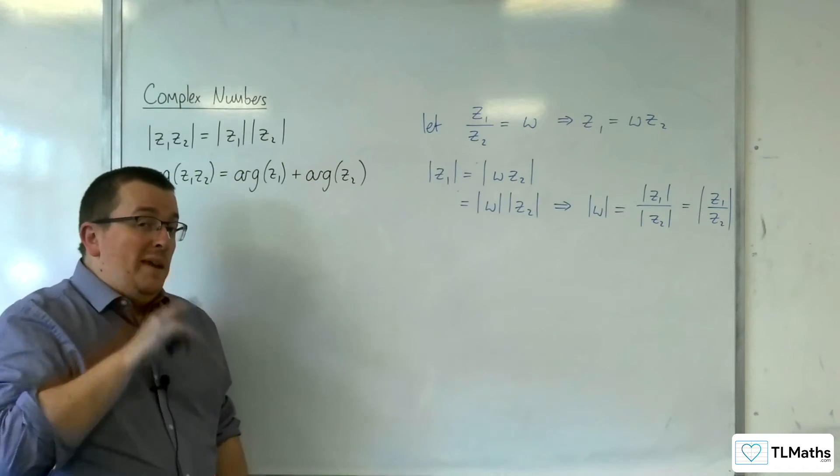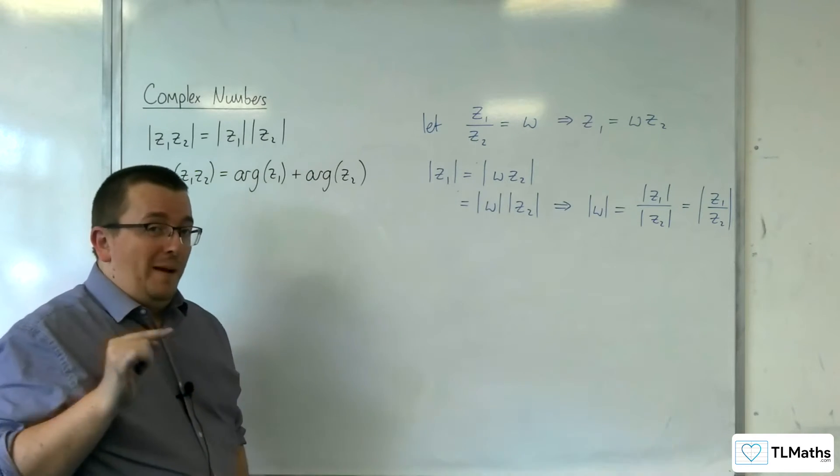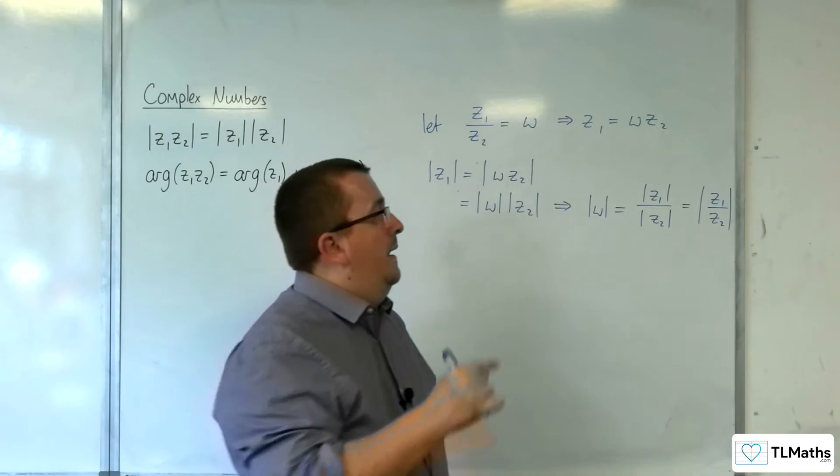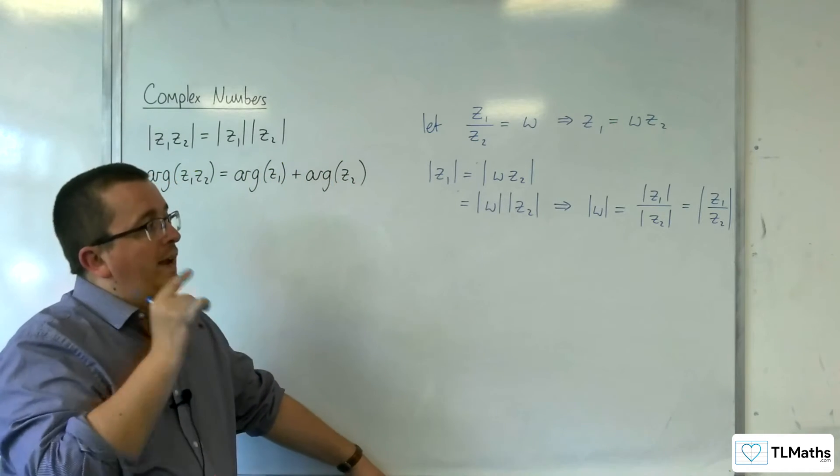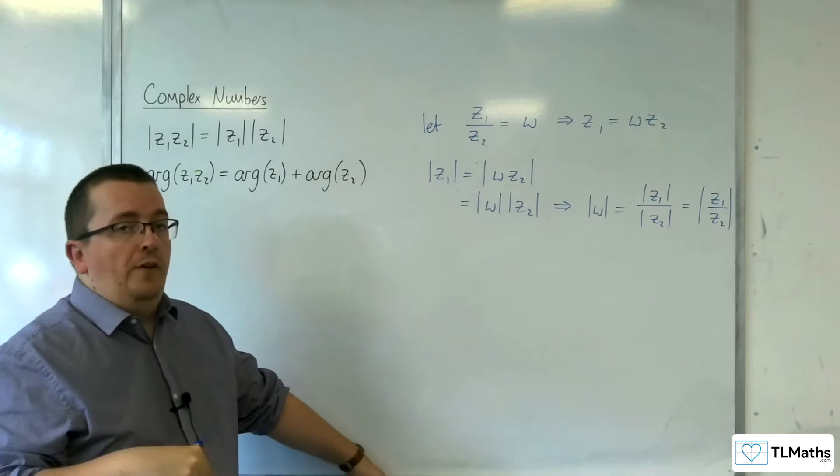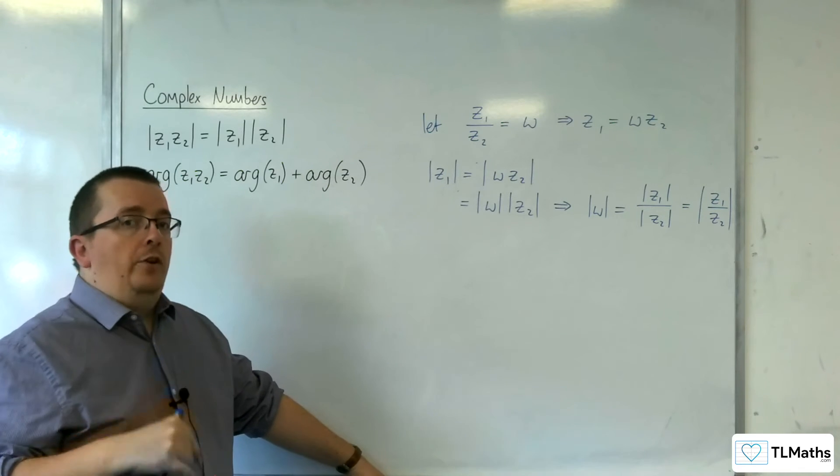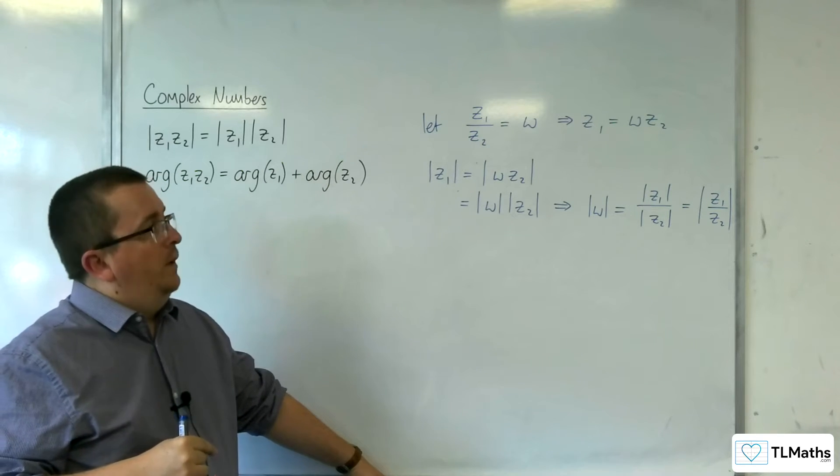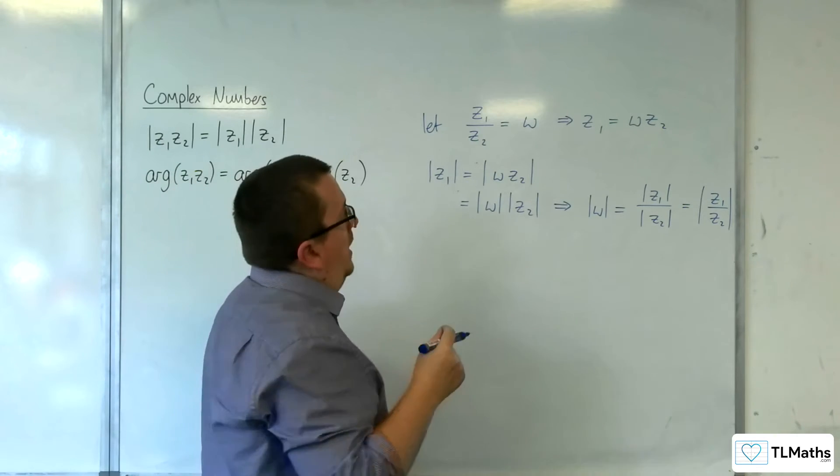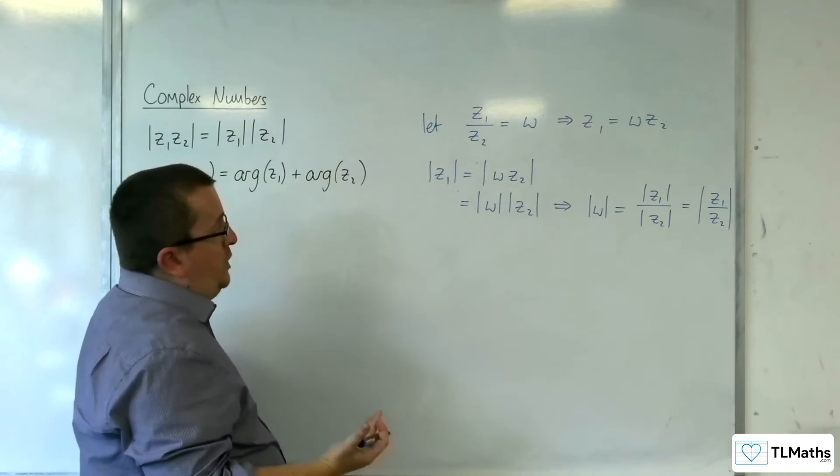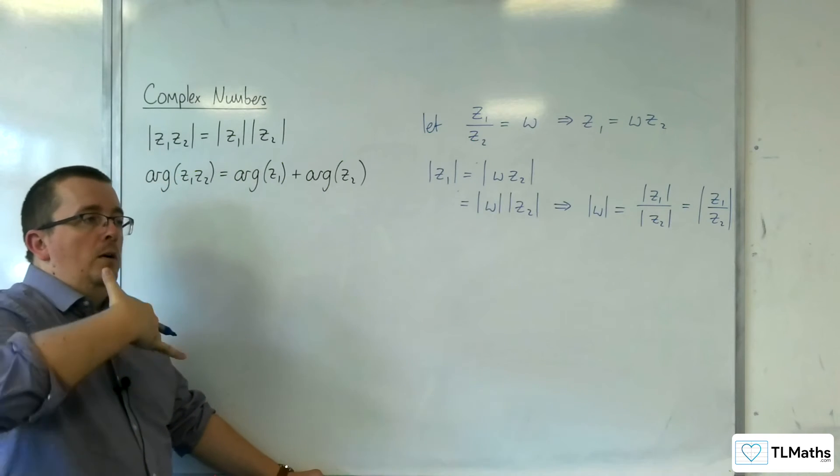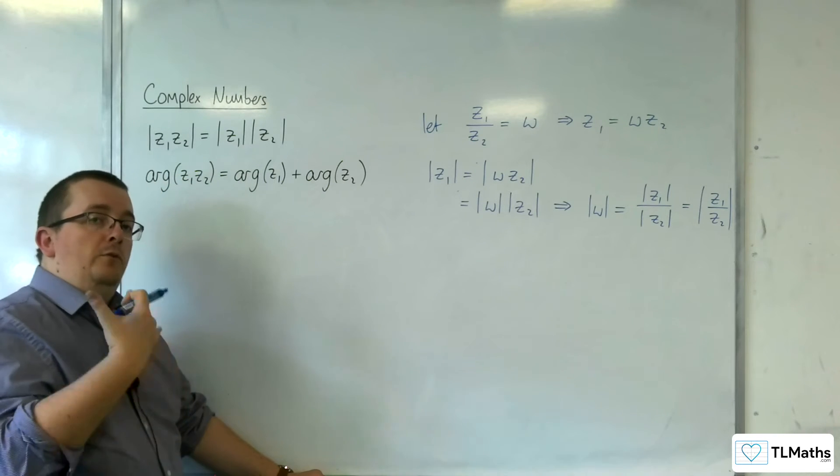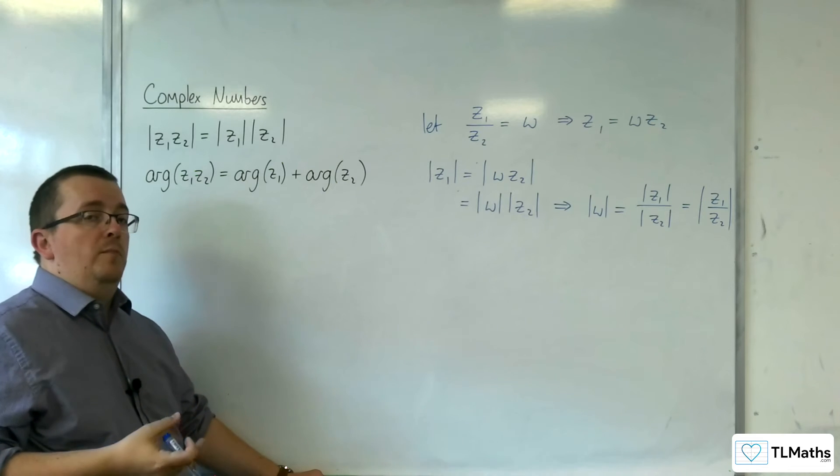Now, what that means geometrically is that I'm effectively multiplying my vector by 1 over the length of Z2. So if you're thinking about it as a transformation, if you're dividing by Z2, you are multiplying it, so using a scale factor of 1 over the modulus of Z2.